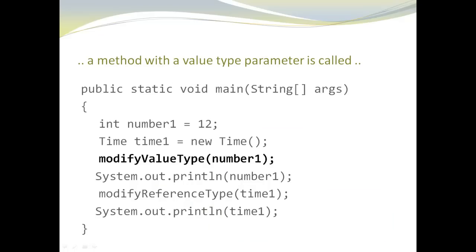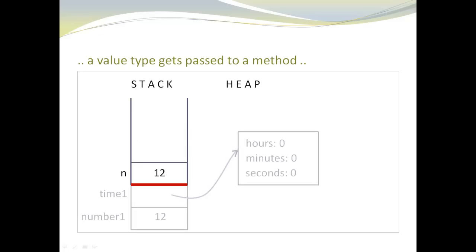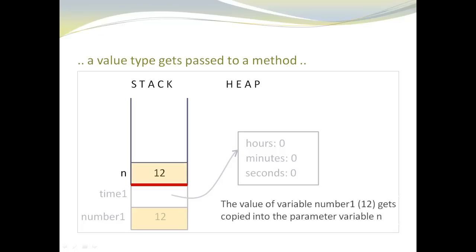Next, we are going to call the modifyValueType method and pass number1. Every time we call a method, a new stack frame is created. You can see the heavy red line — this is a barrier. Everything below is grayed out; it is still there, but we can no longer access it. All we can access at this point is the parameter n, which has the value 12, because we passed number1 which has value 12. The value of variable number1, 12, gets copied into the parameter variable n. We copy the value directly, so we call this pass by value.